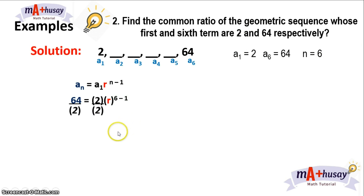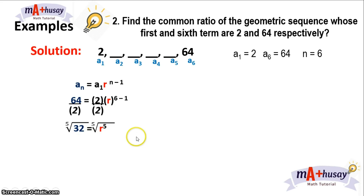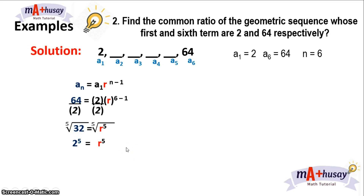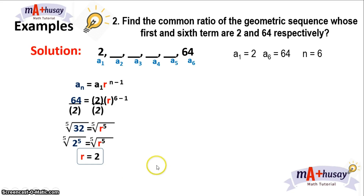We divide both sides of the equation by 2, giving us 32 equals r to the fifth power. We have to get the fifth root of 32. We know that 32 can be written as 2 raised to the fifth power, so if we get the fifth root of both sides, the fifth root of 2 to the fifth power is 2. Therefore, r is equal to 2.